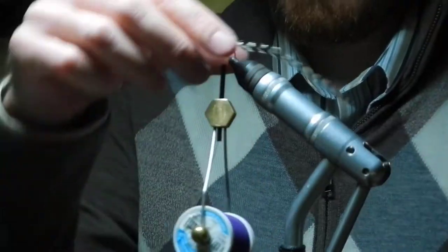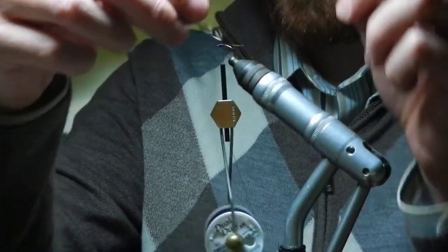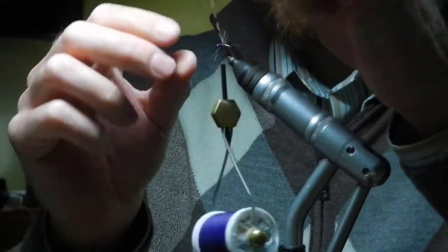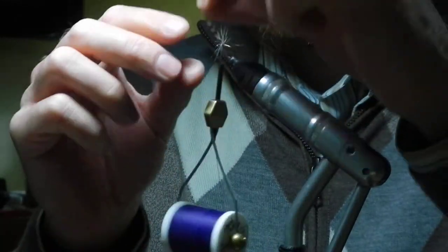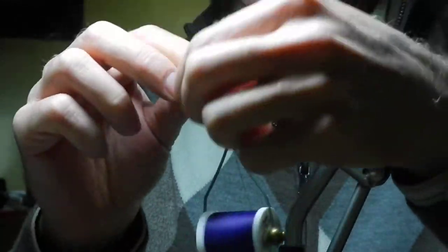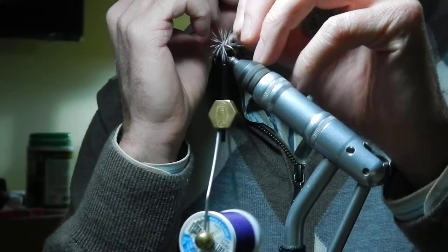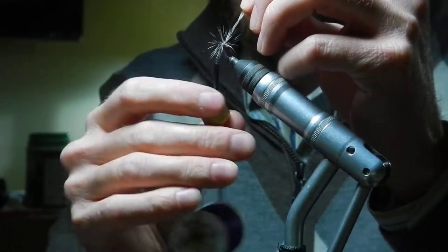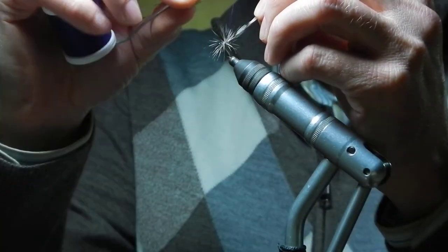So once I get that feather tied in, I'm going to spin it on, spoon side forward, usually about four or so times around. Tie that off.